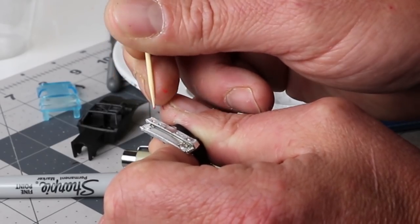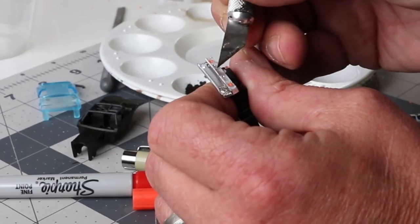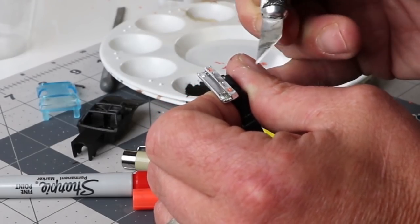So, also, by putting the clear coat on, it allows the paint, any detail paint that you do, to really stick well. Even when you overdo it, you can chip it right off with your knife.